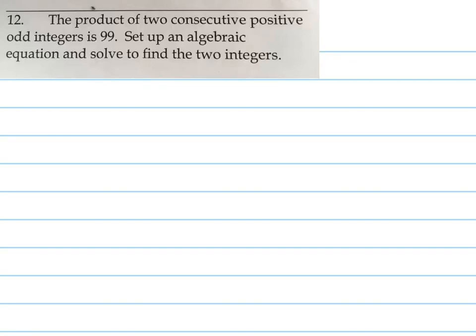This problem says the product of two consecutive positive odd integers is 99. Set up an algebraic equation and solve to find the two integers.